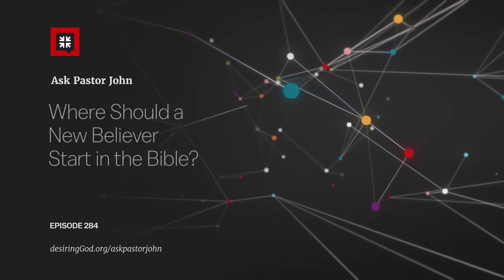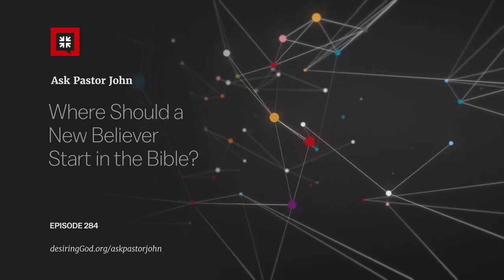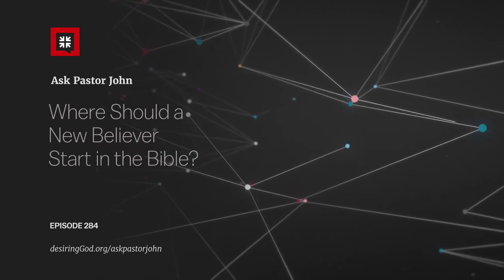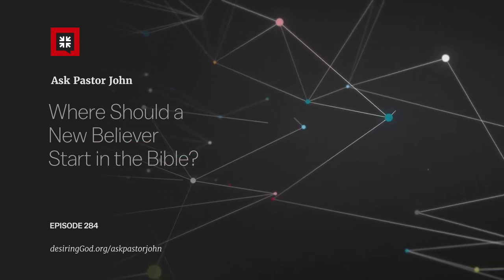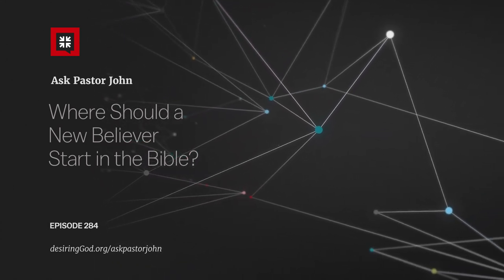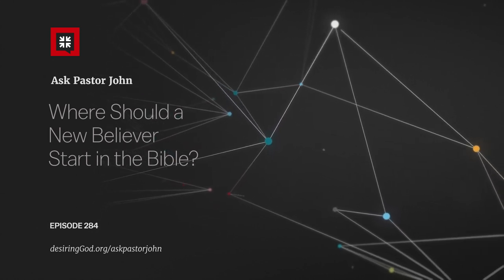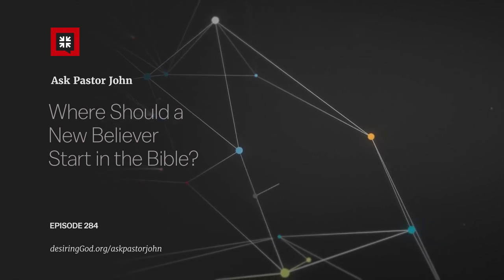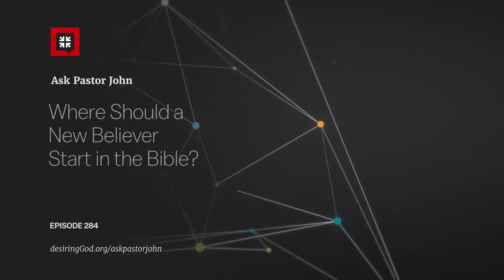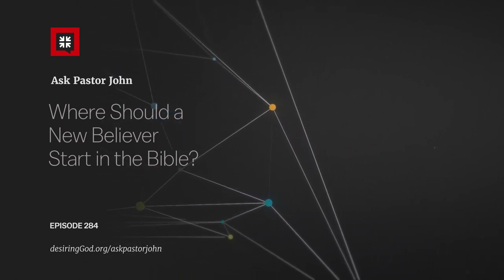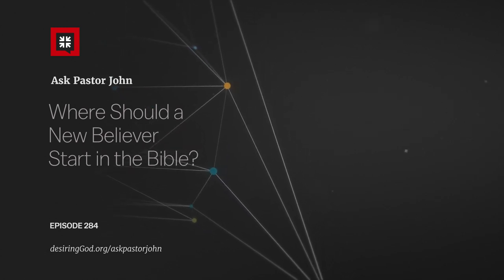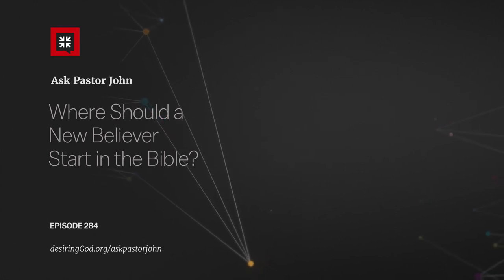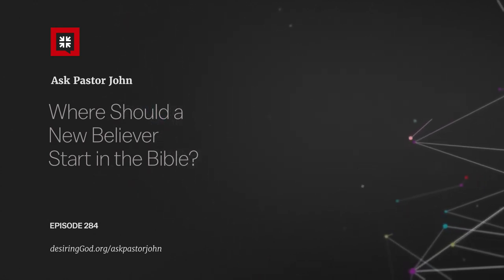Number two, here's the book of Acts. This is the story of how the early church, after Jesus went back to heaven, got started and launched by the power of the Holy Spirit and how the church took root because of what Jesus had done. And then here's this group called Letters. These are the authoritative apostles, the spokesmen for the risen Christ, teaching the church how to live in the church and in society. And here's this strange book at the end called Revelation, which describes the victory of God at the end of the age.